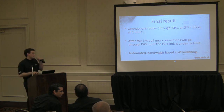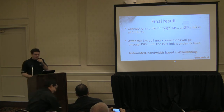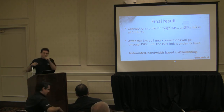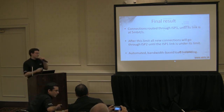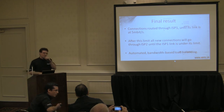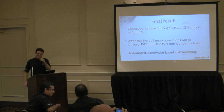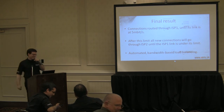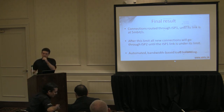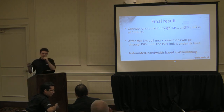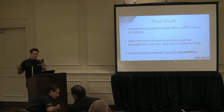The final result: connections are routed to the internet through ISP1 until ISP1 is at 5 megabits utilization. Once ISP1 hits that threshold, all new connections go out through ISP2, until again ISP1 link drops back below 5 megabits. So, automated bandwidth-based load balancing. Once you play with it, you can deploy this in a script in about 5 minutes — we have this deployed with 5 links doing bandwidth-based load balancing, and it works great.